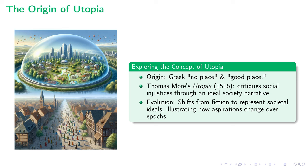Diving right into our exploration of utopia, let's dissect this compelling concept to its core. Deriving from the Greek language, utopia carries intriguing dual meanings. It translates to both 'no place,' alluding to an elusive, ethereal non-existence, as well as 'good place,' suggesting idealism that aspires for perfection. The two interpretations weave an intriguing interplay between reality and idealism, shaping our understanding of utopia.